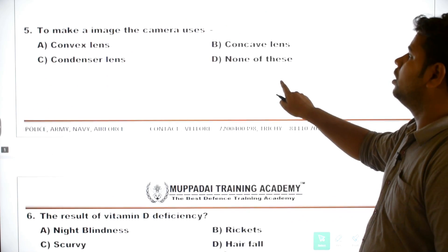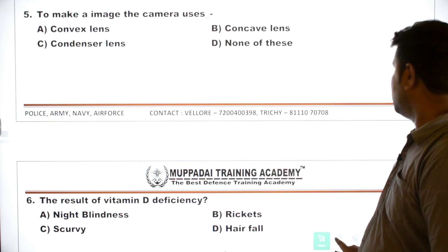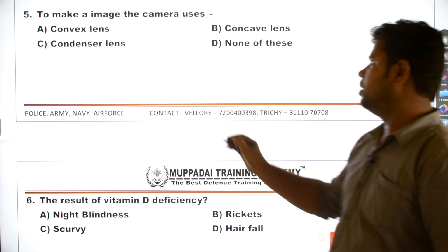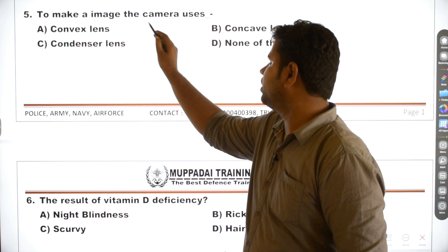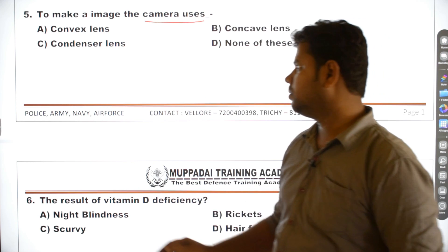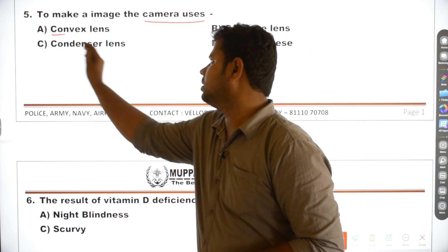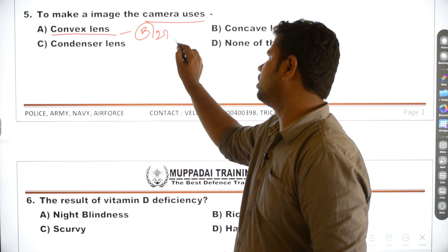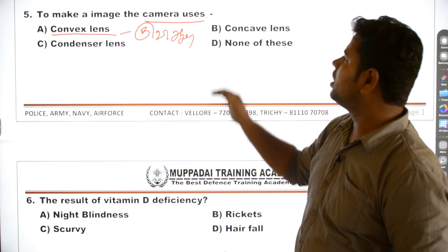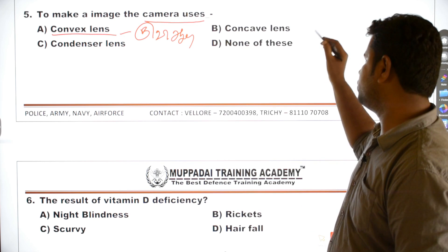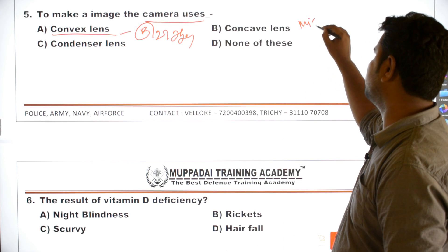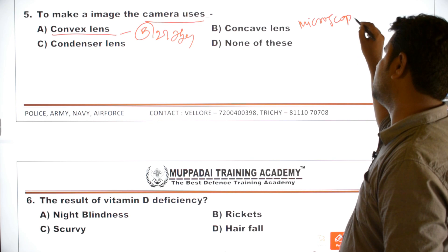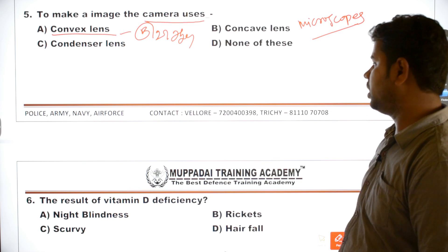The fifth question is to make an image the camera uses. The answer is convex lens. Convex lens is in Tamil, it's called Kuppaadi. This is the camera lens, it's called microscope. It's called convex lens.